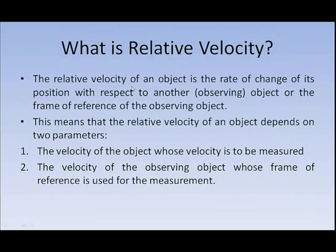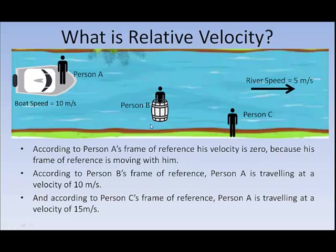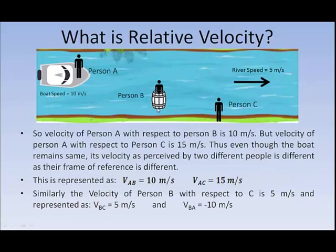Relative velocity depends on two things: it depends on the velocity of the object, and it depends on the velocity of the observing object — whether that observing object is moving or not. In this simple example, as all the vectors were in the same direction — the river, person A, and person B all moving in the same direction — the calculation was slightly easier. We will now move on to another example.